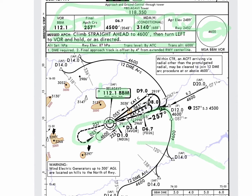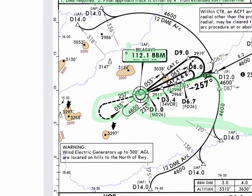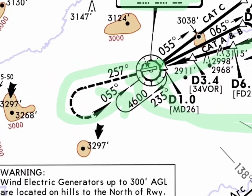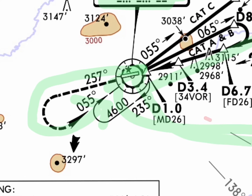We can join from any side. If you are coming from here you can make a DME arc, or you can come over the top. For example, if we are coming over the top — Bravo Bravo Mike — we will proceed outbound. This is a parallel entry: we go outbound, then make inbound, coming to the hold.